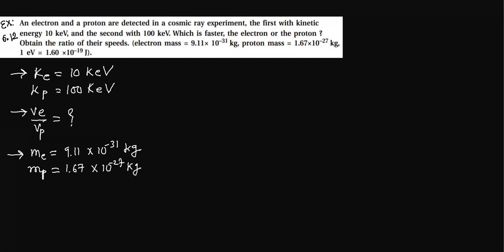Mass of electron is 9.11 times 10^-31 kilogram, mass of proton 1.67 times 10^-27 kilogram. One electron volt equals 1.60 into 10^-19 joules. Kinetic energy is given by...